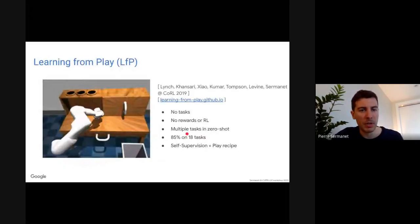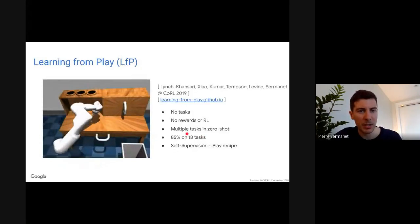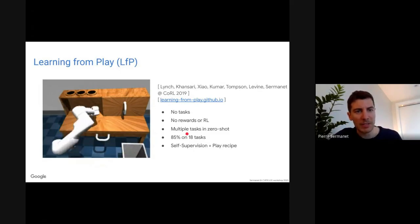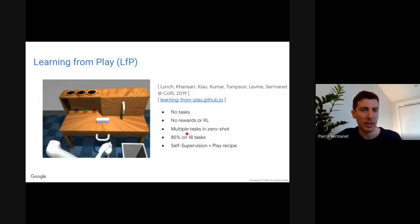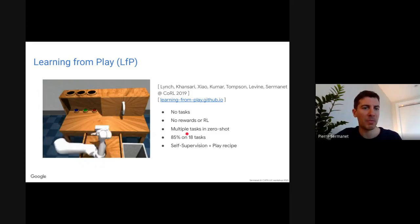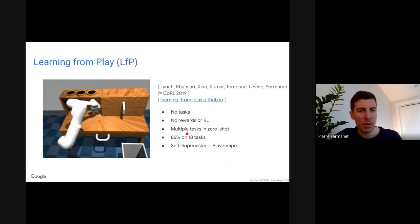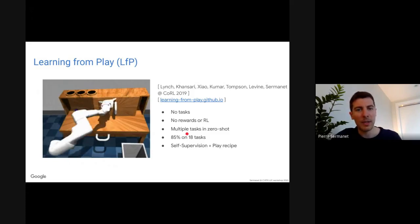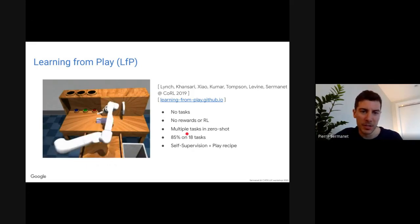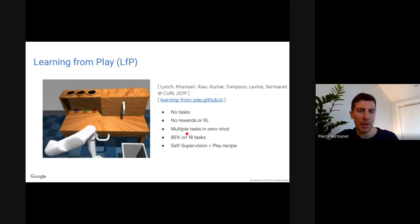The first topic is learning from play, a paper presented at CoRL 2019. The highlight is that we ask people to play with the robot, then see if we can perform tasks from that. We were able to perform any tasks without ever specifying them in advance — no task labels, no rewards, no RL — and achieve 85% accuracy on 18 discrete tasks in zero shot, composed in sequence.